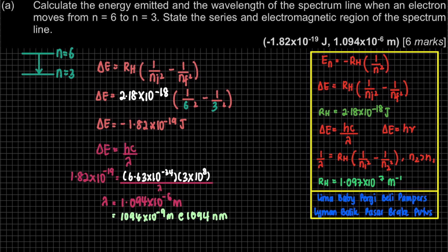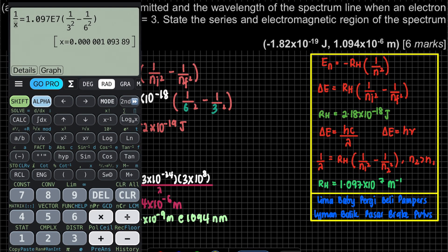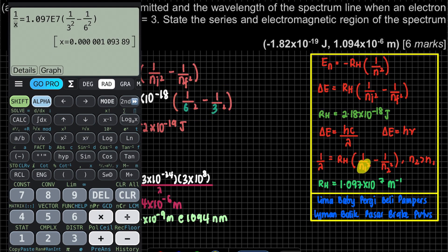So that's the second part — first energy, then wavelength. If you're worried about whether to put negative or positive when using the hc/λ formula, you can also use the 1/λ formula. For 1/λ, N₂ must be the bigger value, so it's 3² used for N₁ and 6 for N₂ — the arrangement is swapped. The RH must be the different value (1.097×10⁷). Using the 1/λ formula, you get the same answer: 1.094×10⁻⁶ meters.